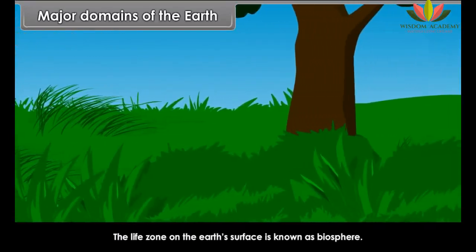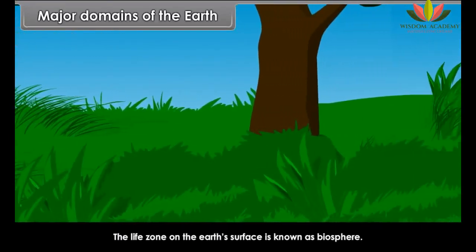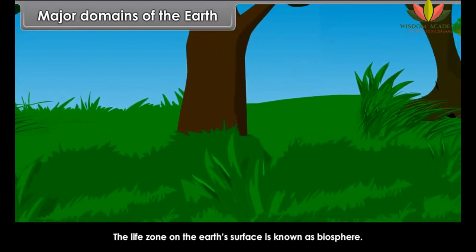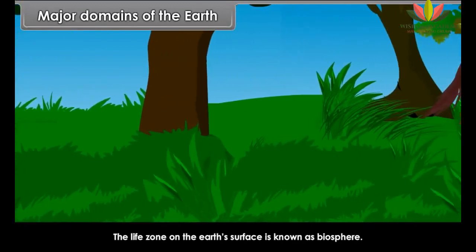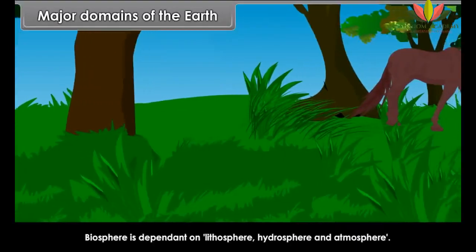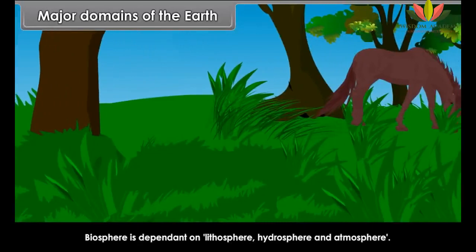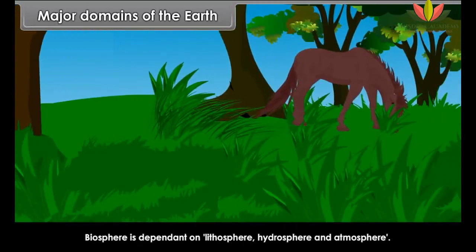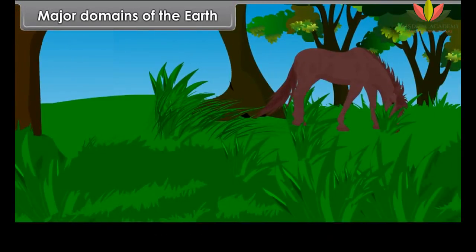The life zone on the earth's surface is known as the biosphere. Biosphere is dependent on the lithosphere, hydrosphere and atmosphere. These are known as the domains of the earth.